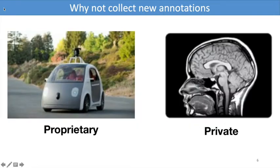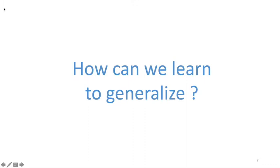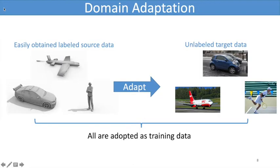On the other hand, some annotations are prohibited due to privacy and security. Thus, how can we learn to generalize to new target tasks? Domain adaptation is proposed for such tasks.